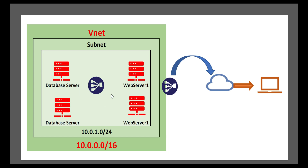As soon as a database server comes back up, the load balancer checks, marks that server as up, and starts directing traffic to it again. It is a continuous process — even when servers are up or down, it continuously checks like a heartbeat whether the server is up or down. You don't have to manually intervene. You can define a particular VLAN where you have multiple database servers or web servers, and it will automatically detect and divert traffic to those services.